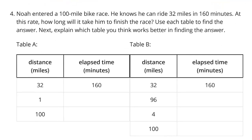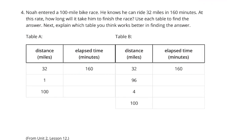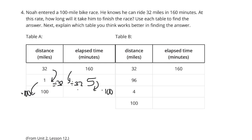Question 4. Noah entered a 100-mile bike race. He knows he can ride 32 miles in 160 minutes. At this rate, how long will it take him to finish the race? Use each table to find the answer. In Table A, we go from 32 down to 1 mile by dividing by 32. So 160 divided by 32 gives 5 minutes per mile. Then from 1 to 100 miles we multiply by 100, giving 500 minutes.